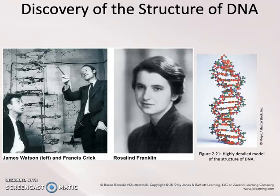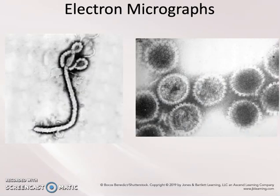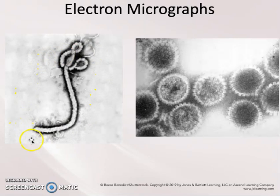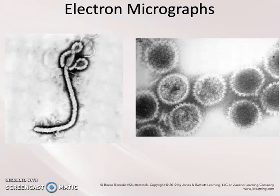Images of molecules aren't the only important molecular advance. In fact, the electron microscope was also an important imaging tool that allowed scientists to view molecules, including structures like viruses. Here we have an electron micrograph of the Ebola virus and of the herpes simplex virus that causes genital and oral herpes. Electron micrographs allow us to see structures that light microscopes cannot see. Because they use electrons, they are always in black and white and gray, and the images you see in your textbook are artificially colored by an artist.